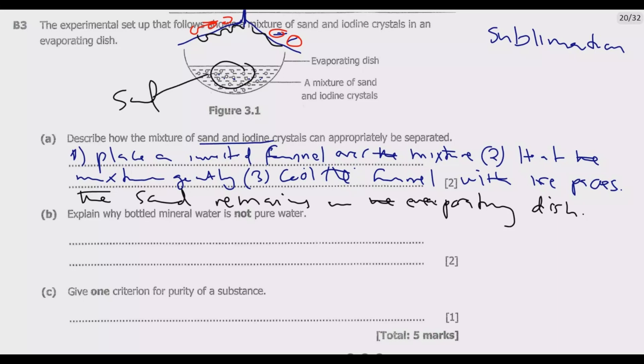Question (b): Explain why bottled mineral water is not pure water. Bottled mineral water is not pure because it contains variously dissolved substances. Among the key substances are minerals like calcium, potassium, and magnesium. There are also salts and sometimes even gases.